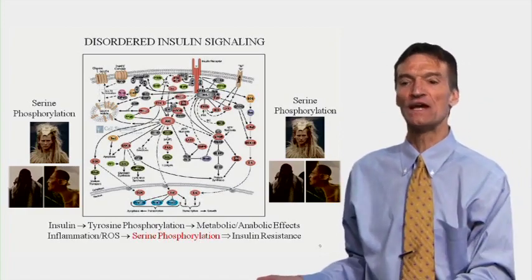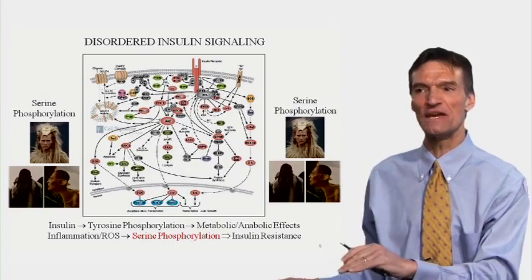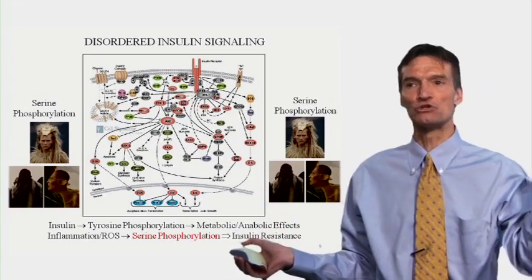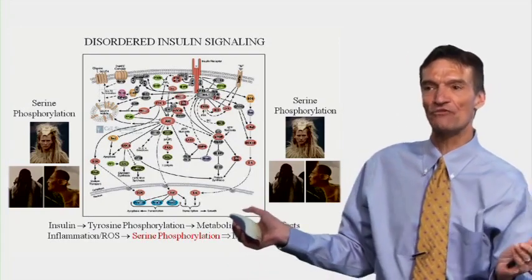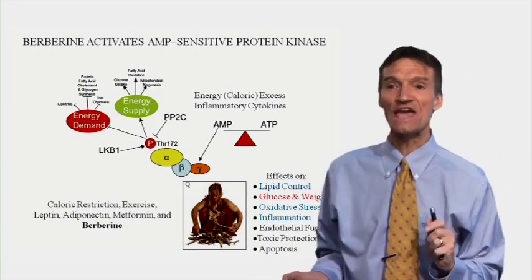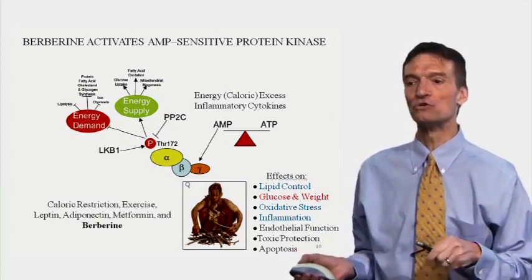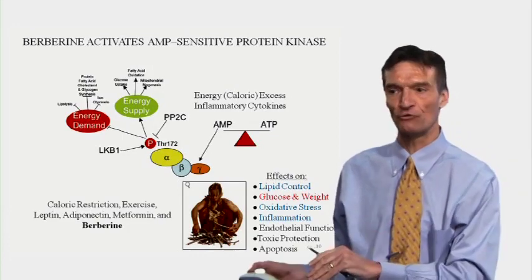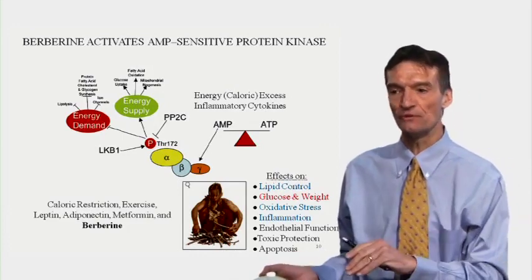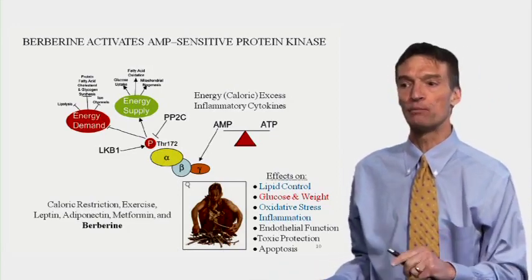Insulin works by promoting tyrosine phosphorylation of its downstream receptors. Icpokinase and inflammation blunt this by causing serine phosphorylation. There's a battle: tyrosine phosphorylation promotes insulin sensitivity, while serine phosphorylation — the response to inflammation — causes insulin resistance. Berberine activates AMP-sensitive protein kinase, sending a 'burn, do not build' signal. We want to slow cell proliferation, lower cholesterol and triglycerides, blunt oxidative stress and inflammation, and we'll talk about how AMPK upregulation improves glucose control and helps with weight management.